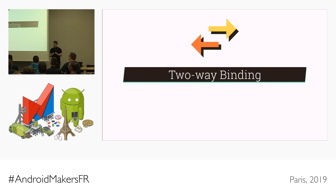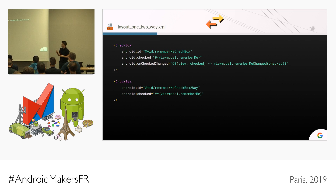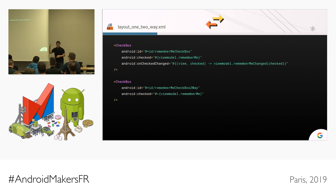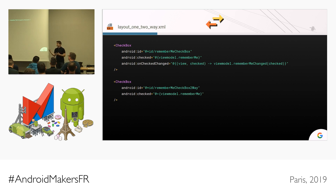Two-way data binding is a very advanced topic, and it's completely optional. The reason is that you can do everything that two-way data binding does with one-way data binding. On a checkbox, you can have a layout expression assigned to the checked attribute, and then the onCheckedChange assigned to a lambda — so we're basically writing to the UI and reading from the UI. Is this two-way data binding? No, it's just one-way data binding in two different directions.